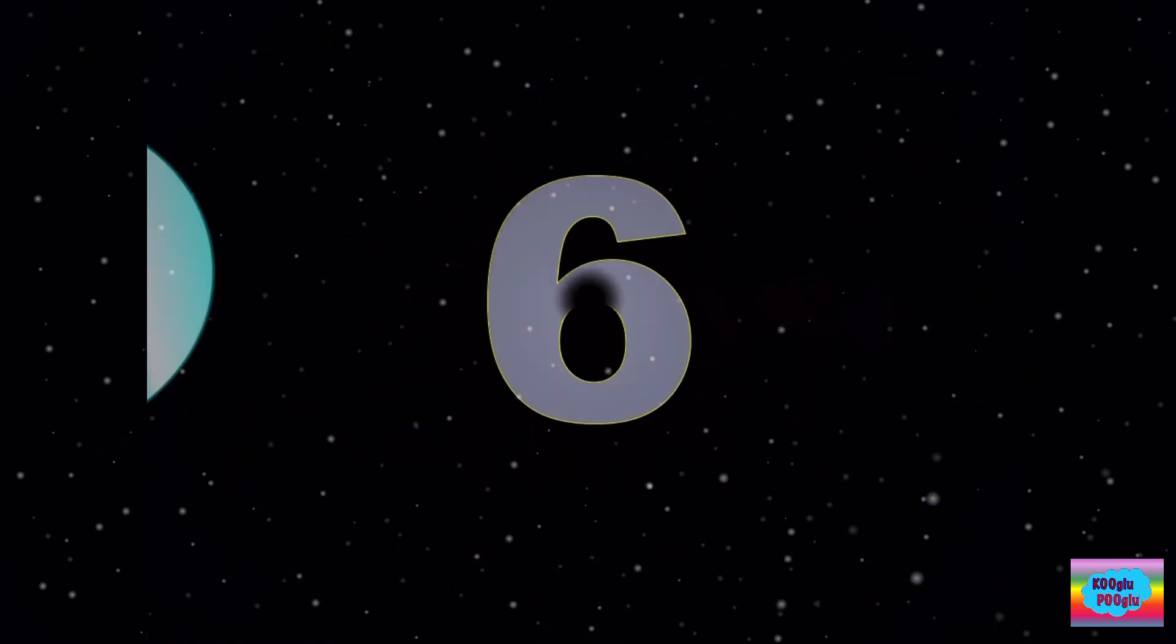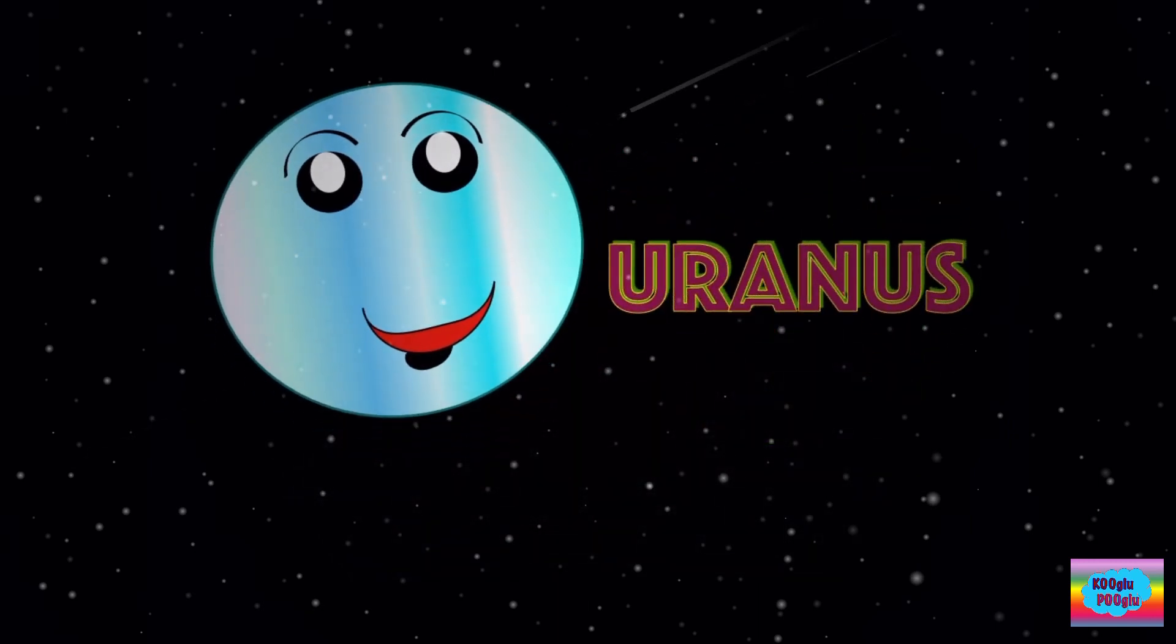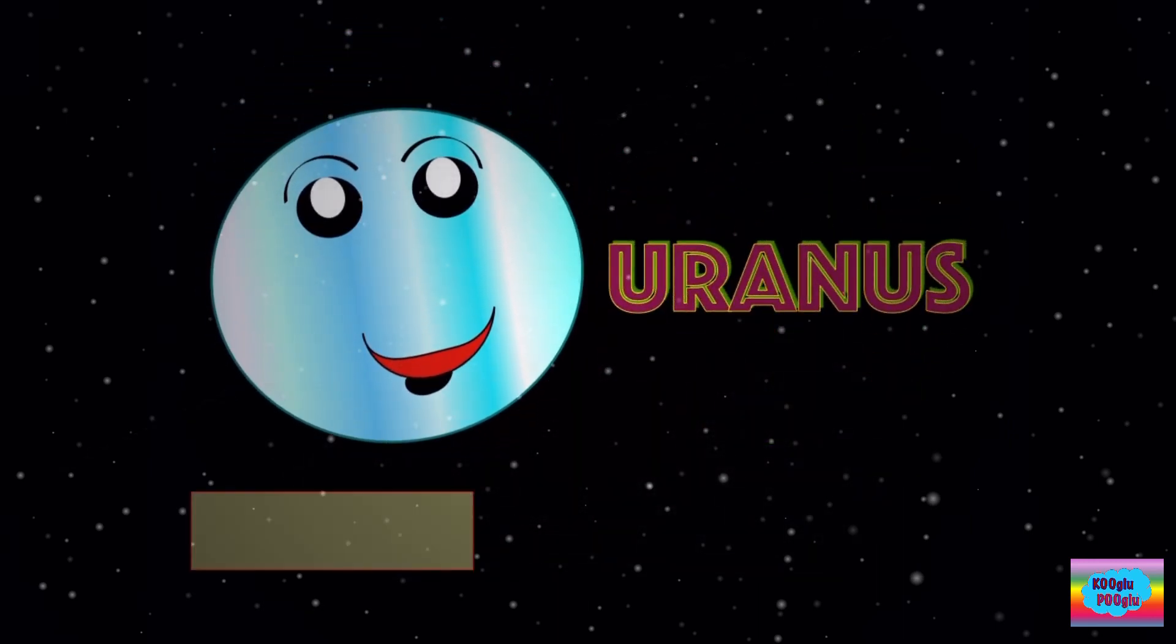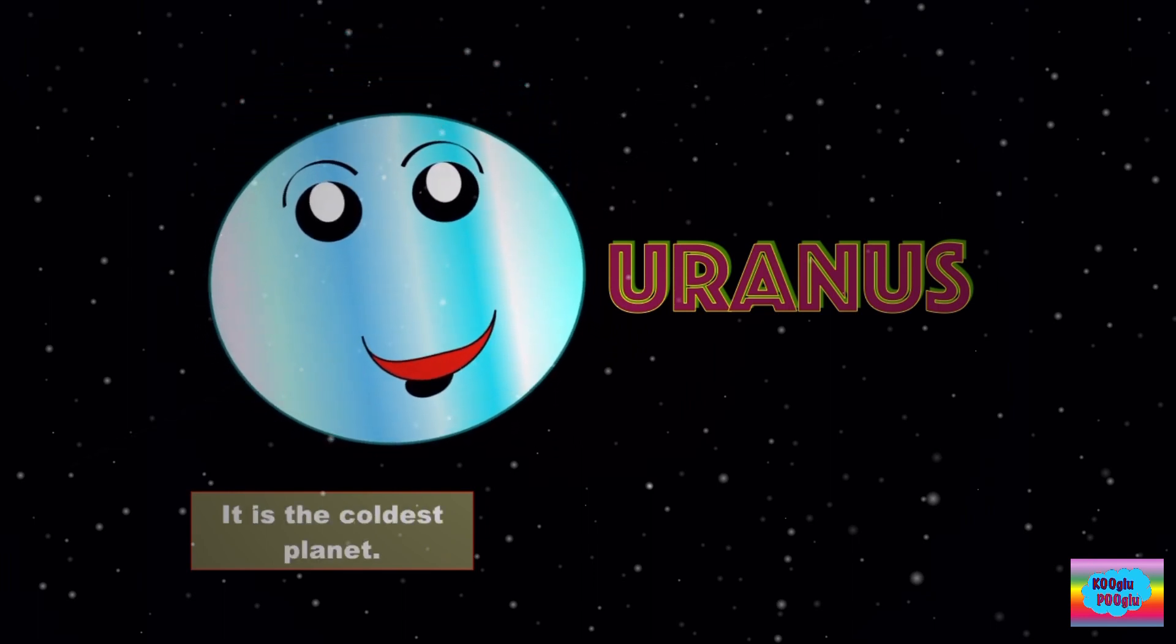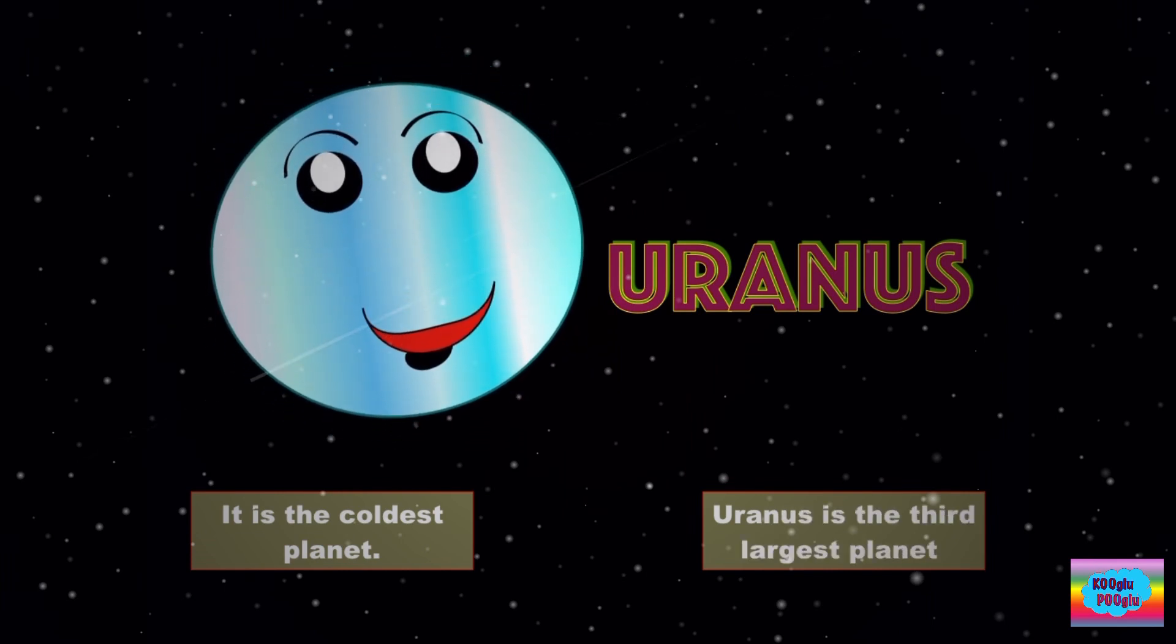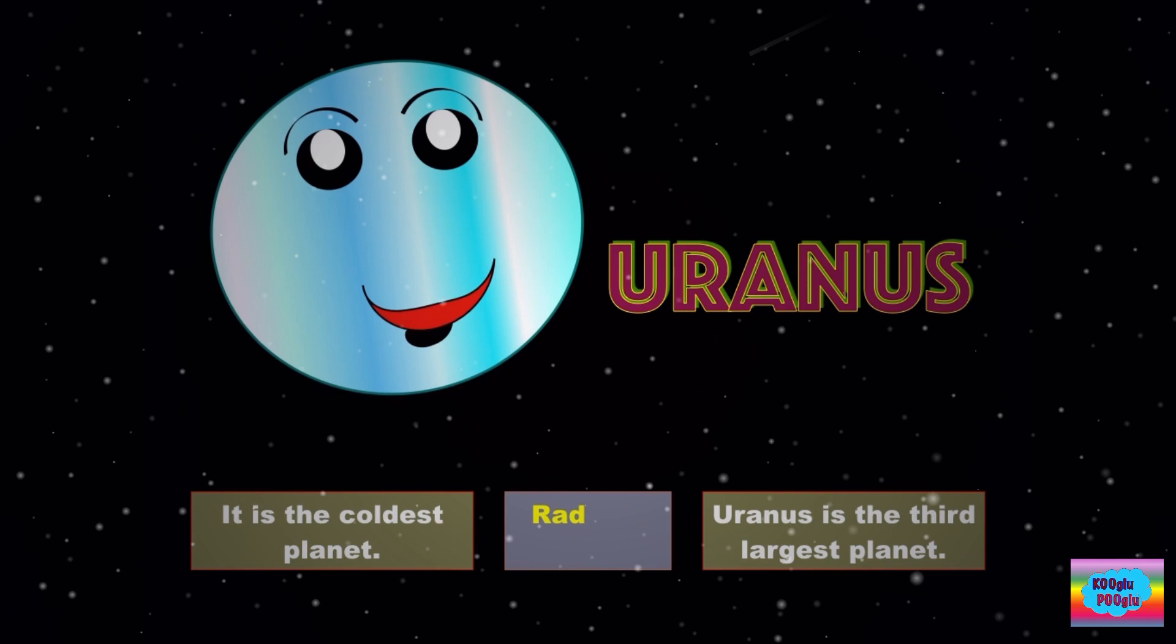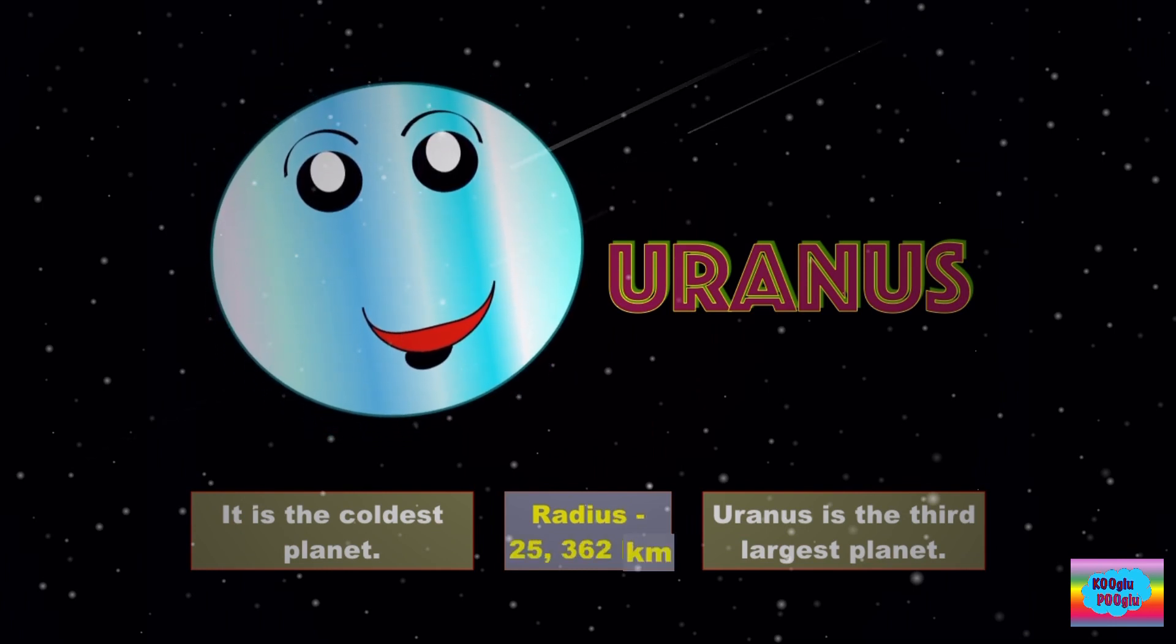Now we're on to planet 6, Uranus. It is the coldest planet. Uranus is the third largest planet. I'm a big planet. Radius is 25,362 kilometers.